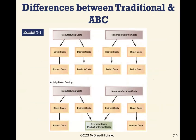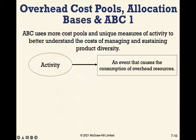A graphic compares traditional costs and ABC. Under traditional costing, we separate manufacturing and non-manufacturing costs. Under activity-based costing, indirect costs from both manufacturing and non-manufacturing are treated as overhead costs and either assigned to products through an activity measure or to the period itself. ABC uses more cost pools and unique measures of activity to better understand costs for managing diverse products.